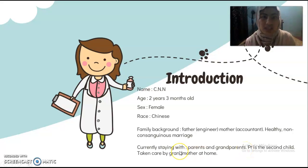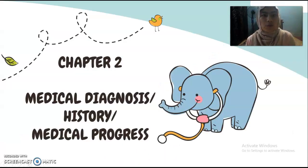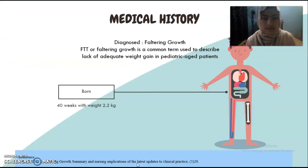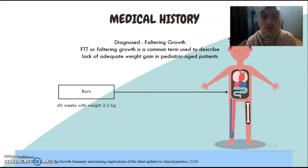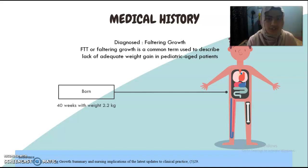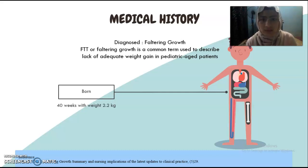She was taken care of by her grandmother at home. For Chapter 2, Medical Diagnosis History — for the medical history, she was diagnosed with faltering growth, which is a common term used to describe lack of adequate weight gain in a pediatric-age patient.